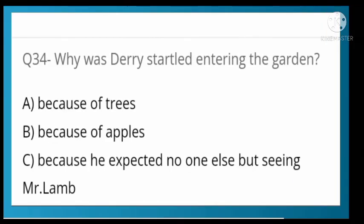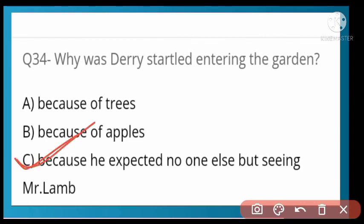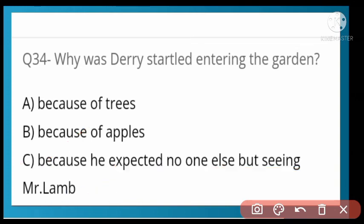Why did Derry start entering the garden? He felt that only Mr. Lamb could understand his feelings and be friendly towards him. He felt that hope and made friendship with Mr. Lamb.